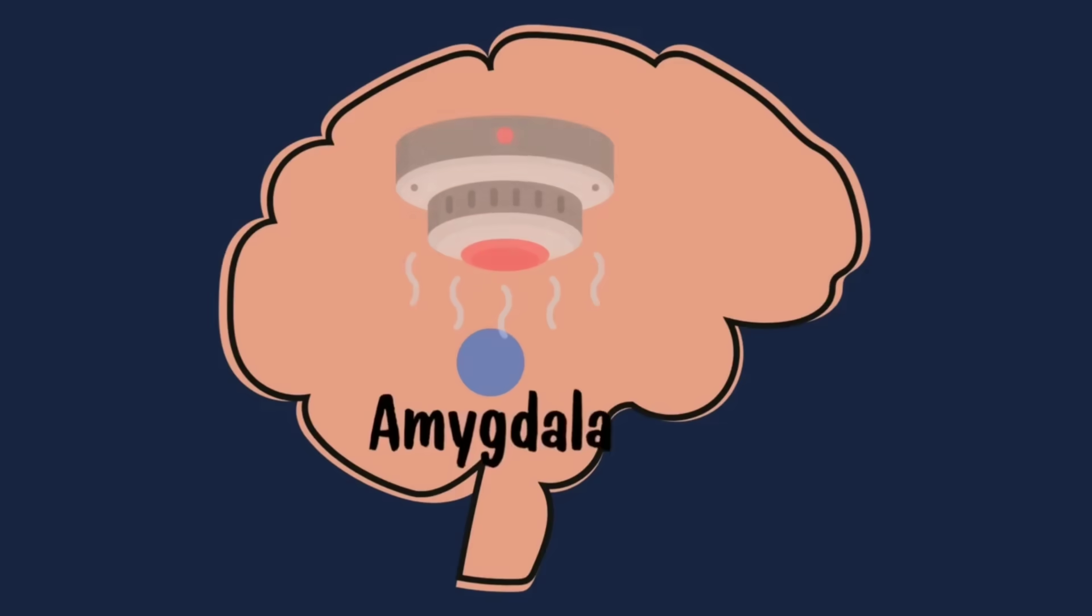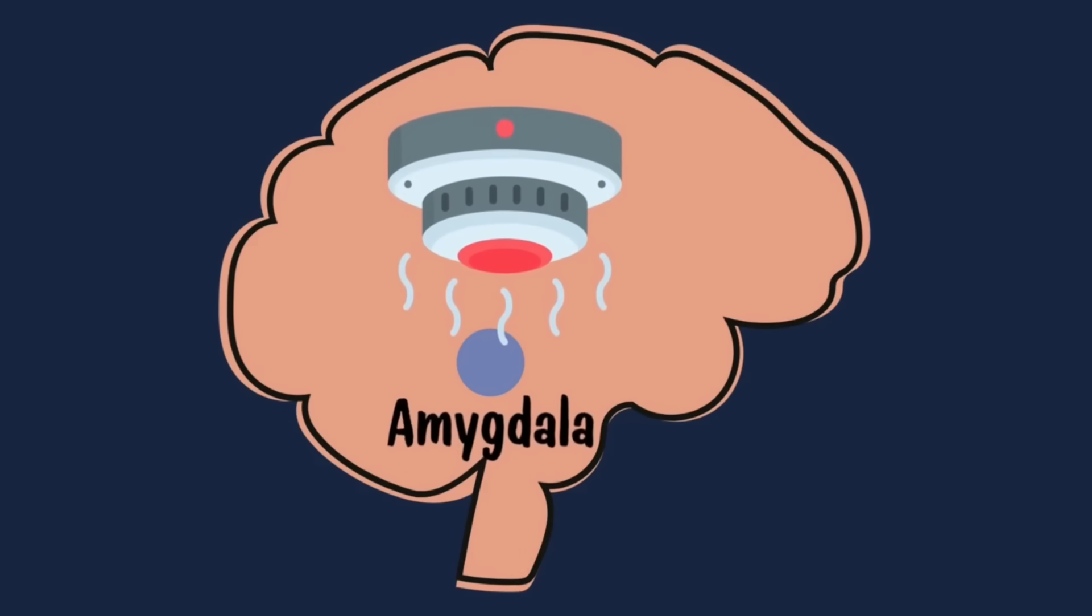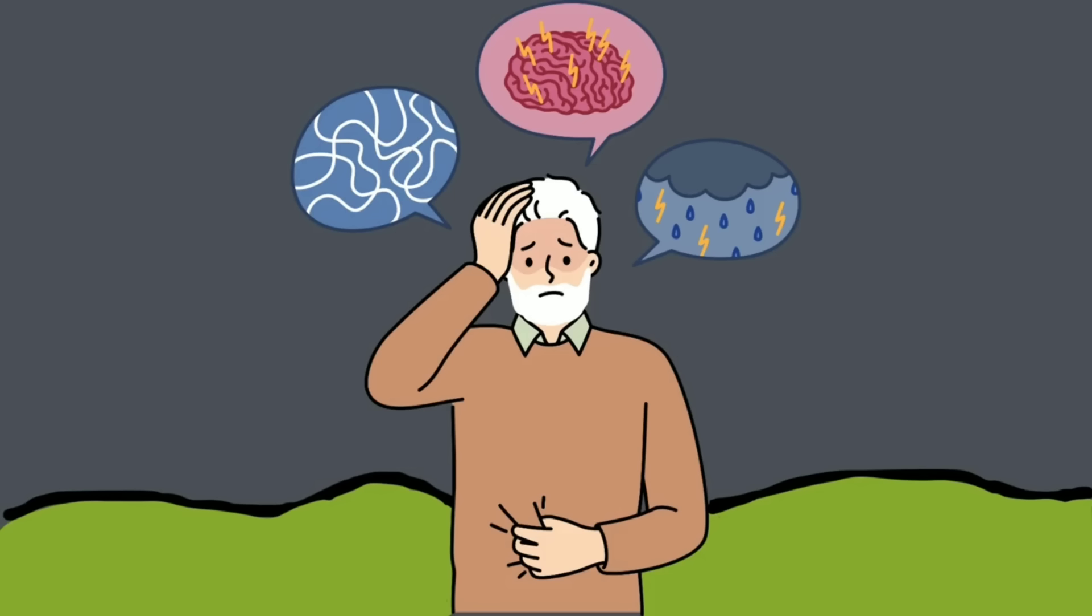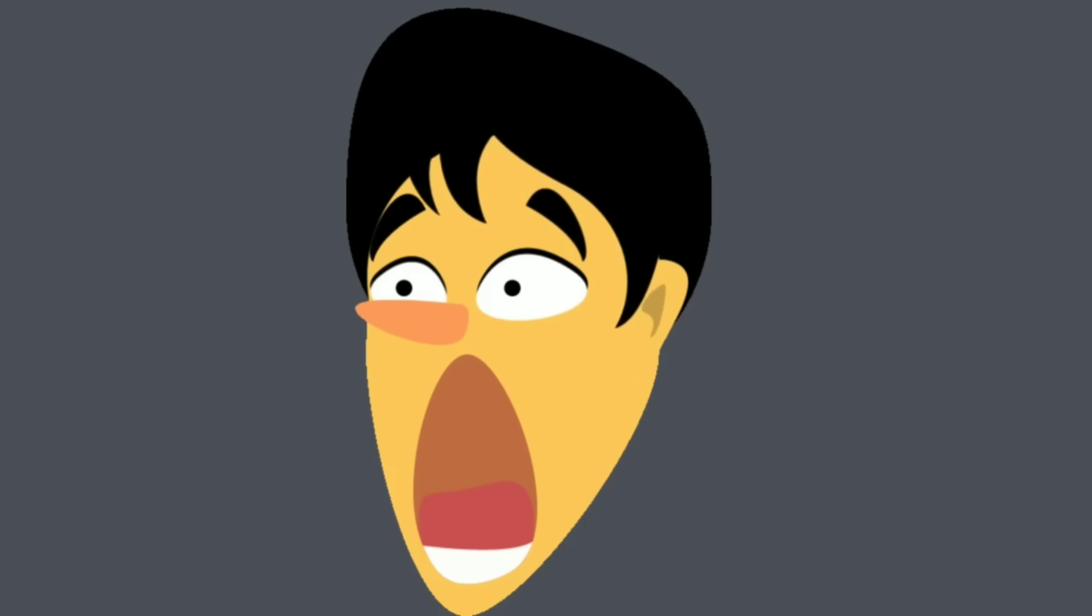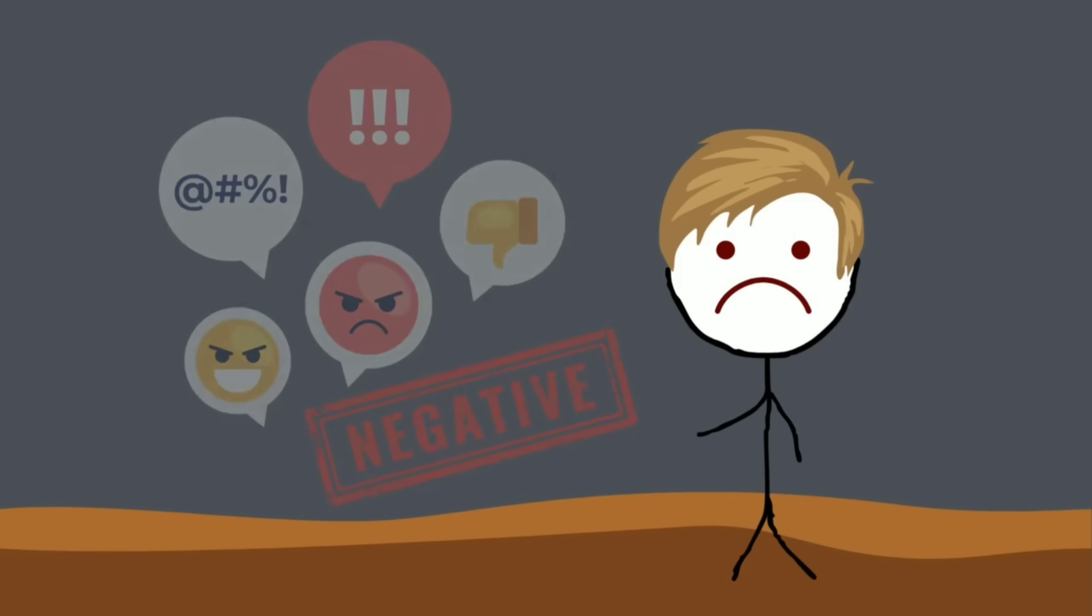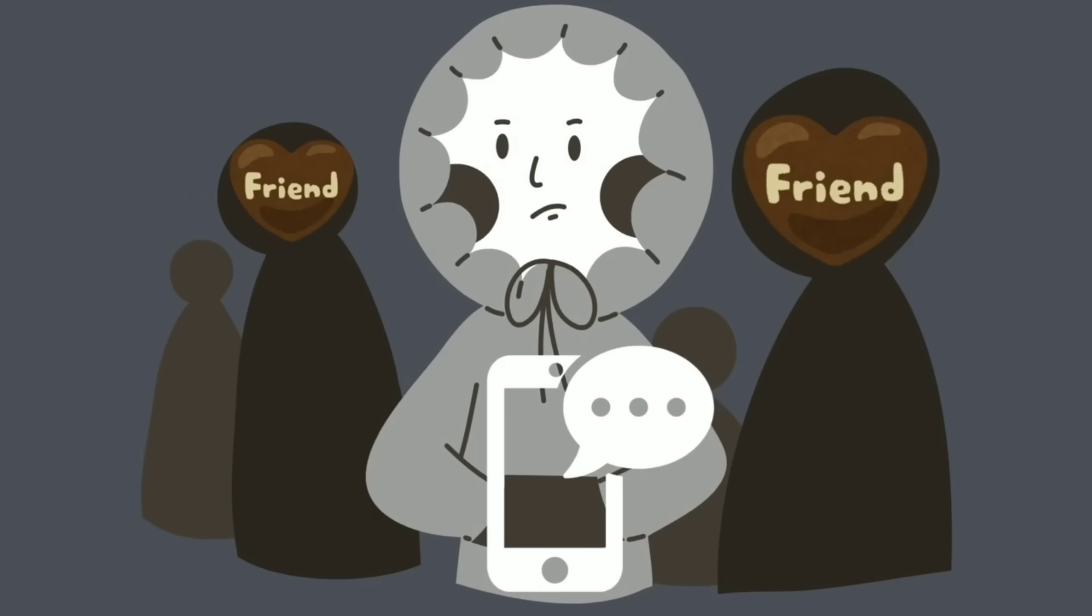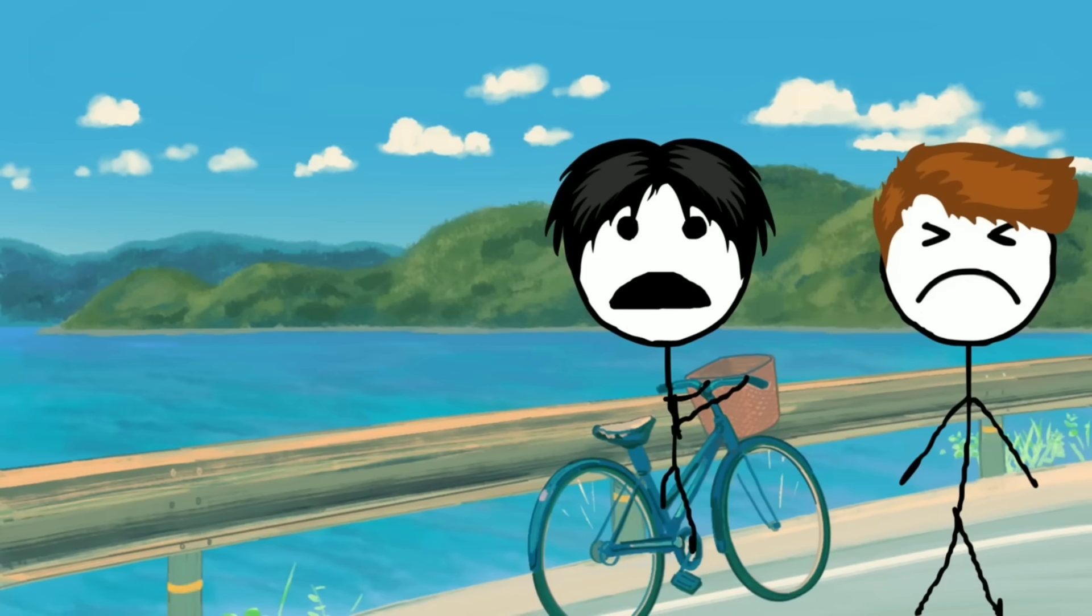One of the first regions to light up is the amygdala, your brain's emotional smoke detector. It becomes hypersensitive. Every glance, every silence, every little rejection feels bigger. You start to perceive neutral situations as negative. A friend not texting back feels personal. A stranger not smiling feels hostile. And it doesn't stop there.